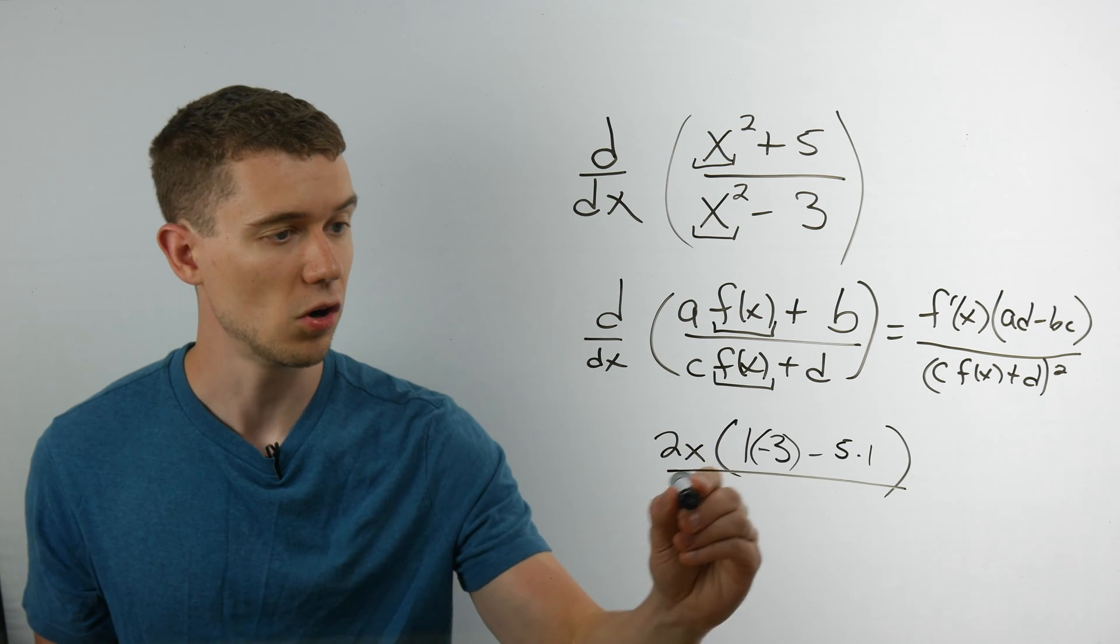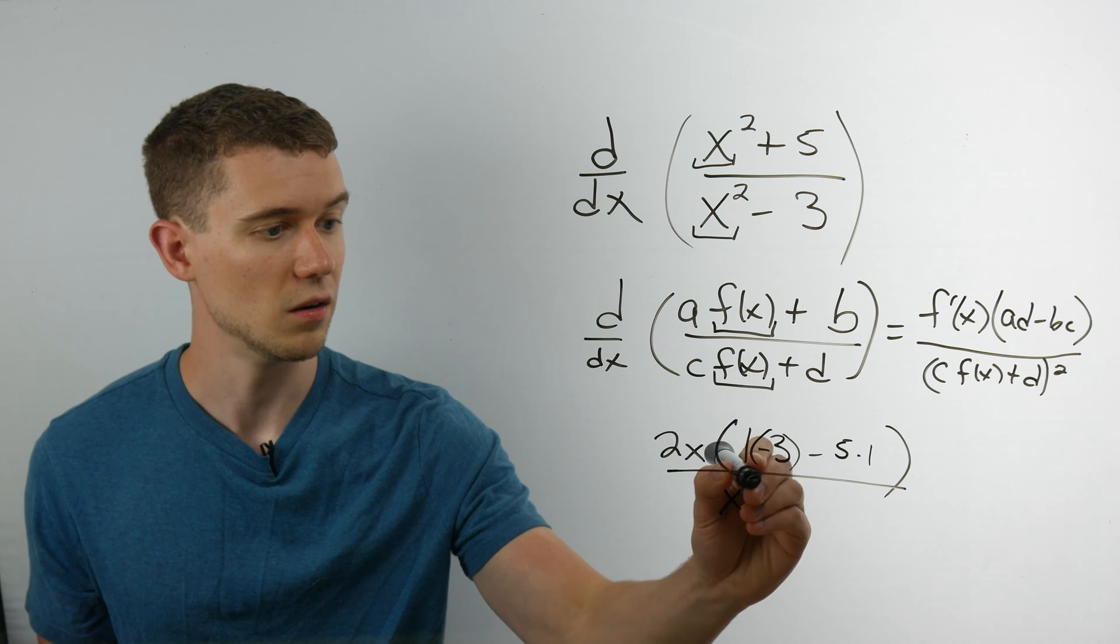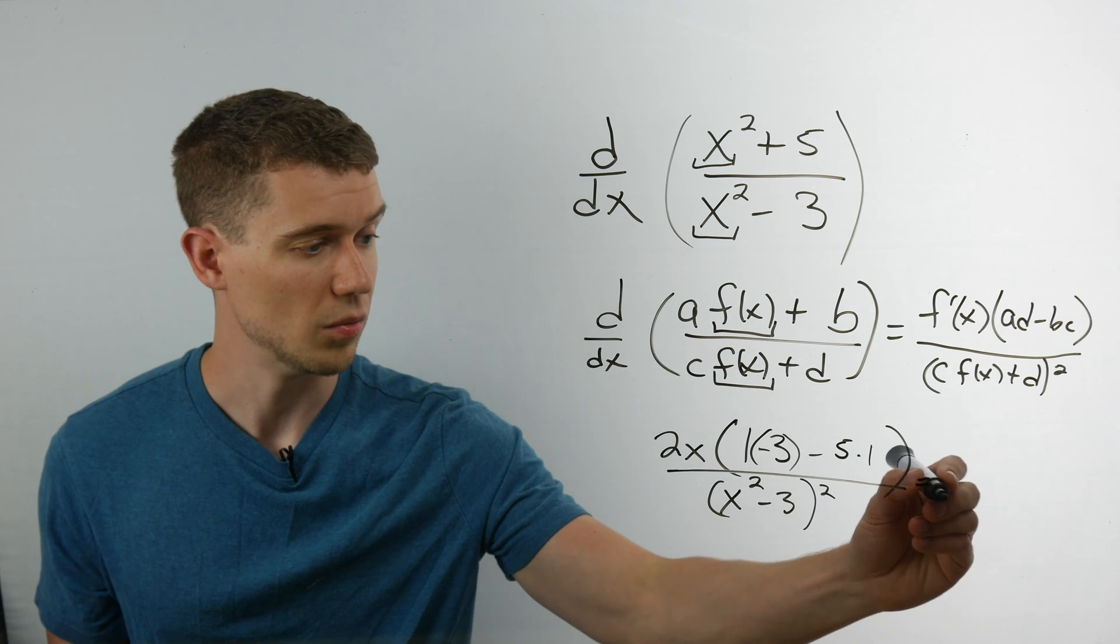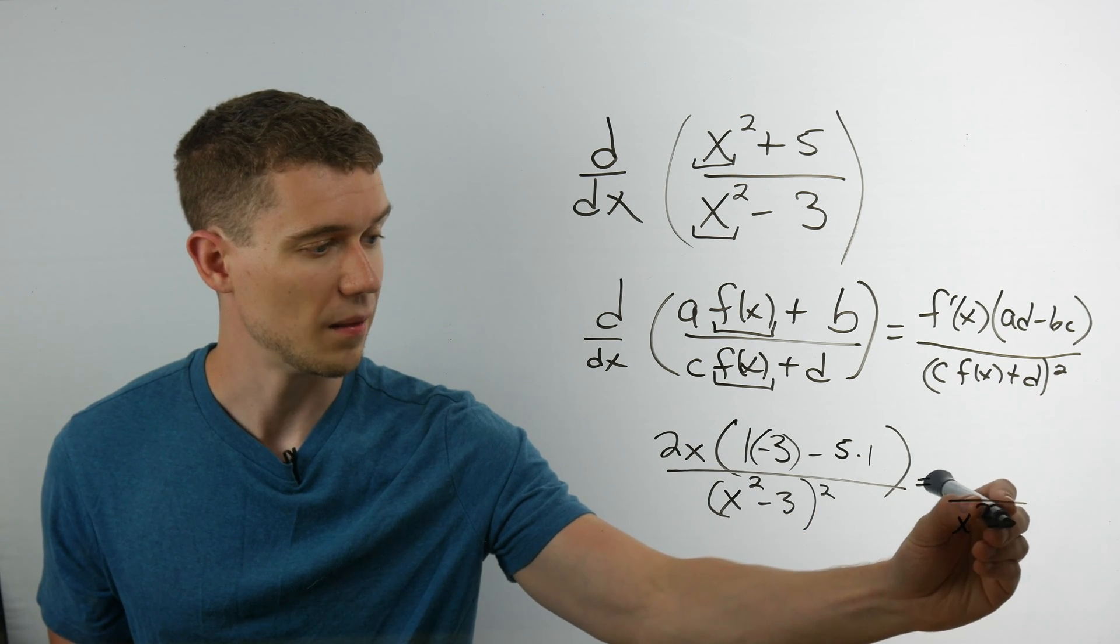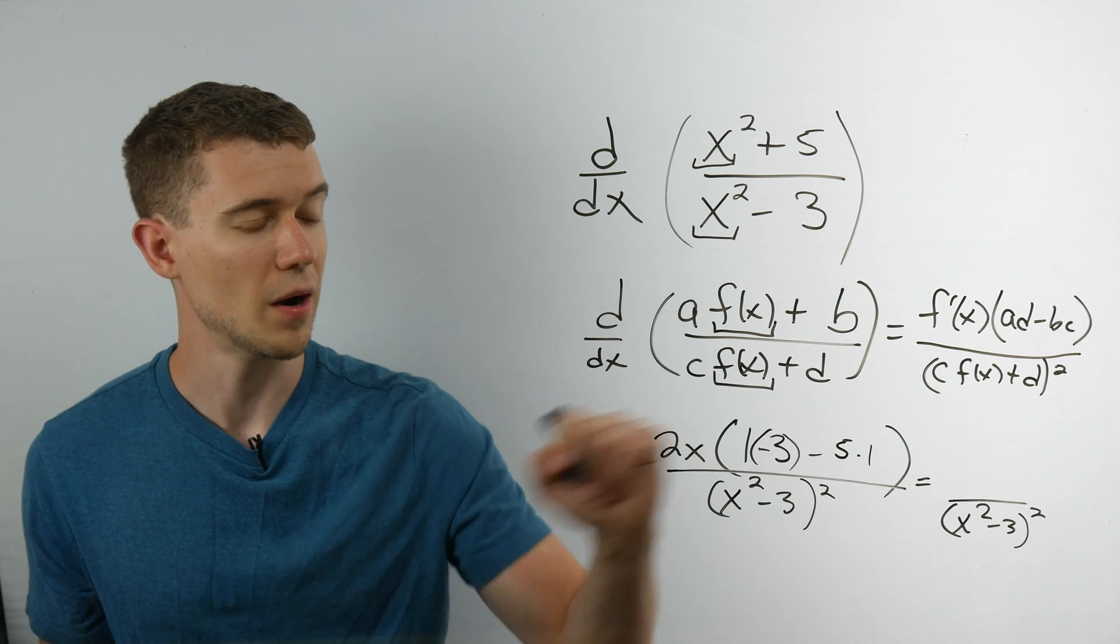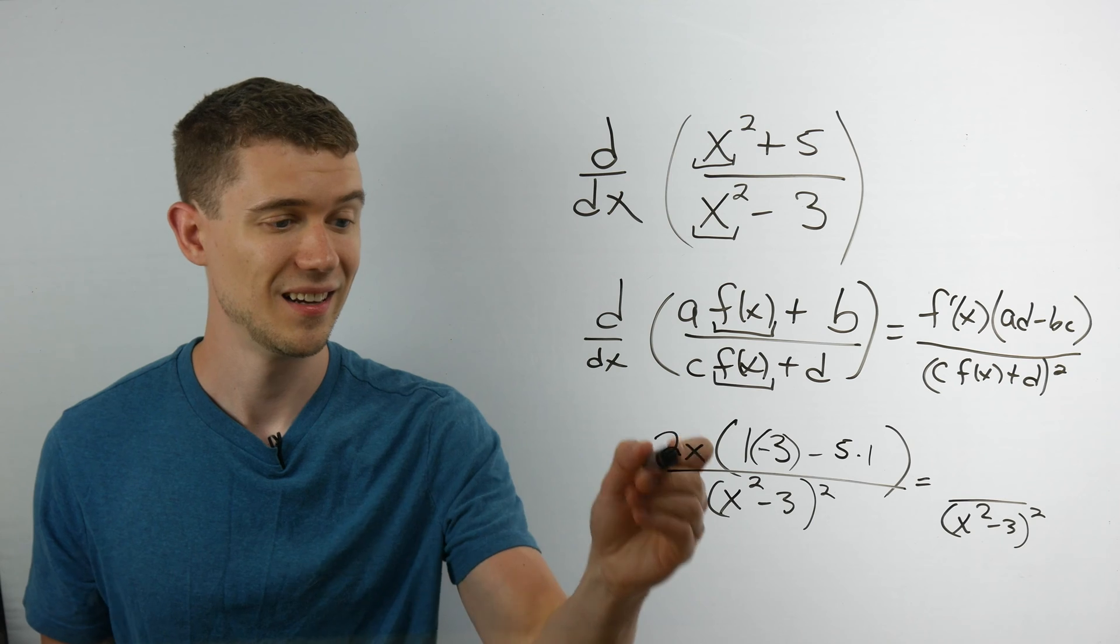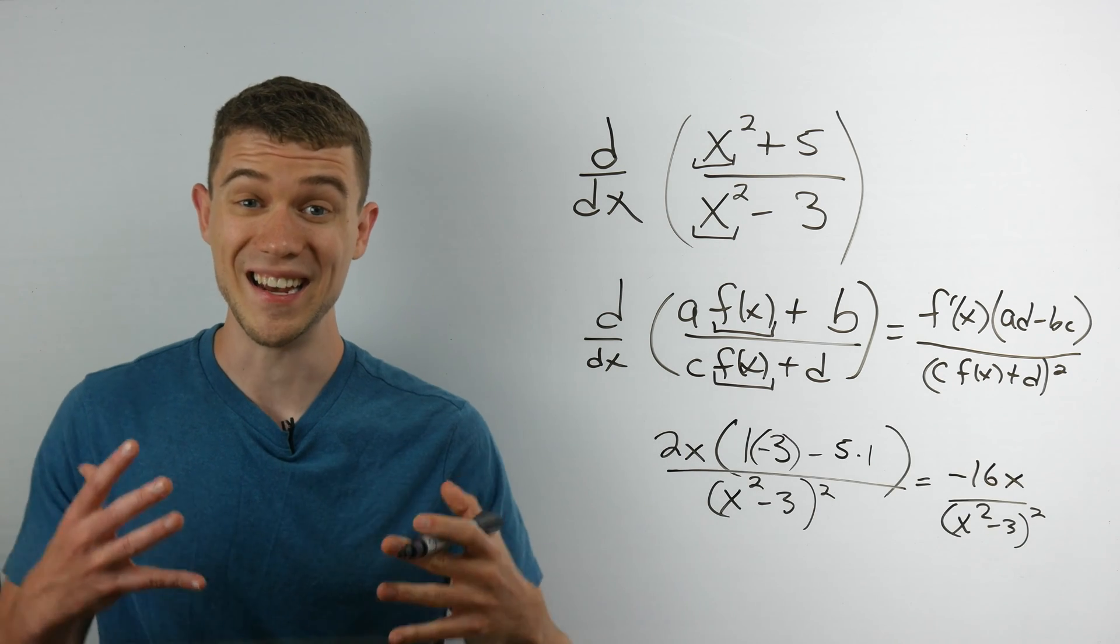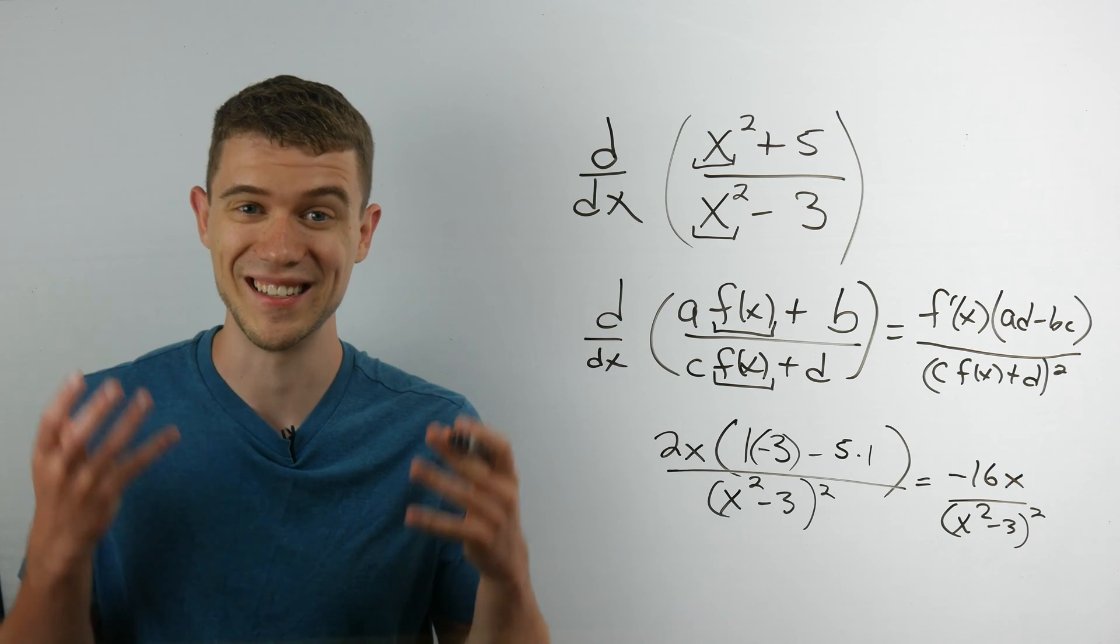And then that's all over the denominator squared. And so if you simplify this, you'll simply get the bottom squared. I'll have minus 3 minus 5 is negative 8. Times 2 will give me that negative 16x on top. And there you go. It's all nice and done.